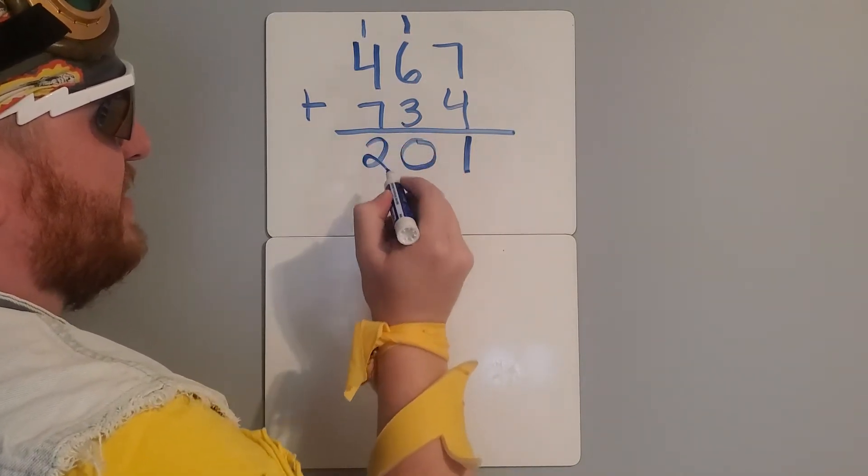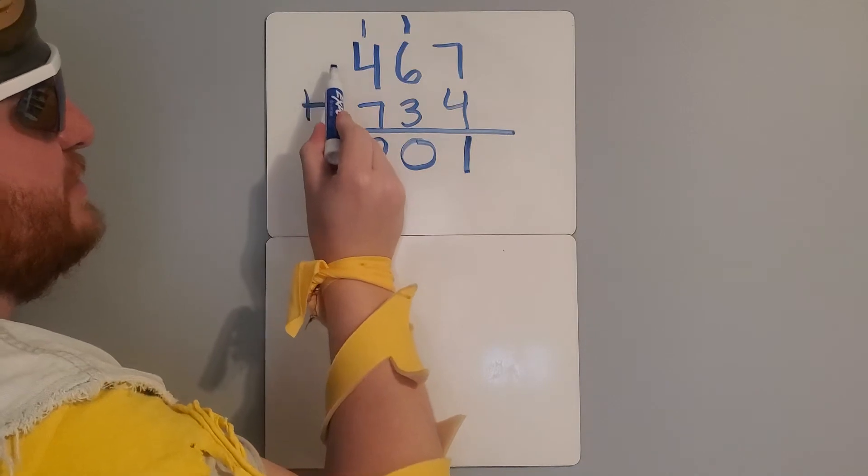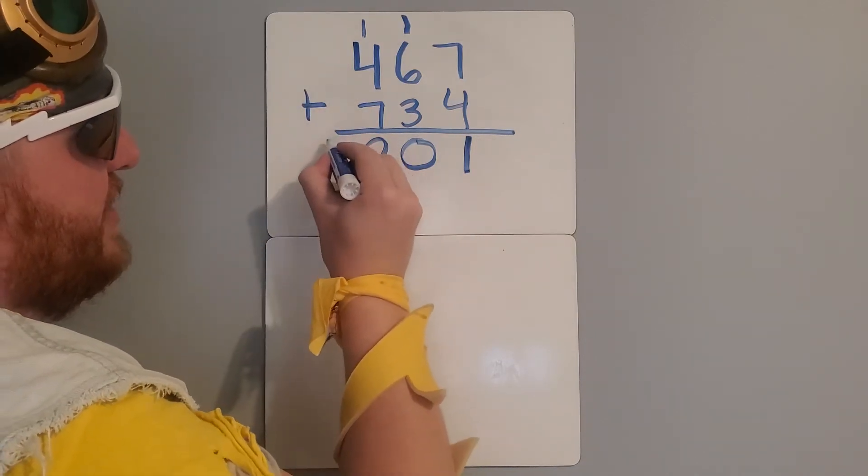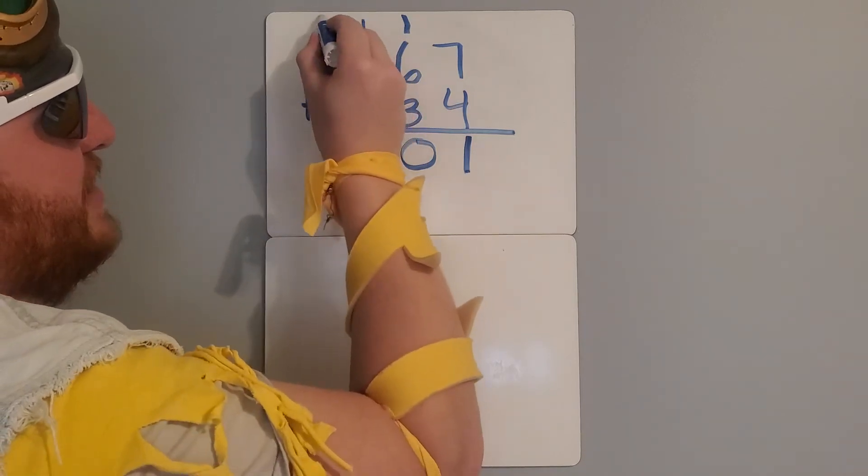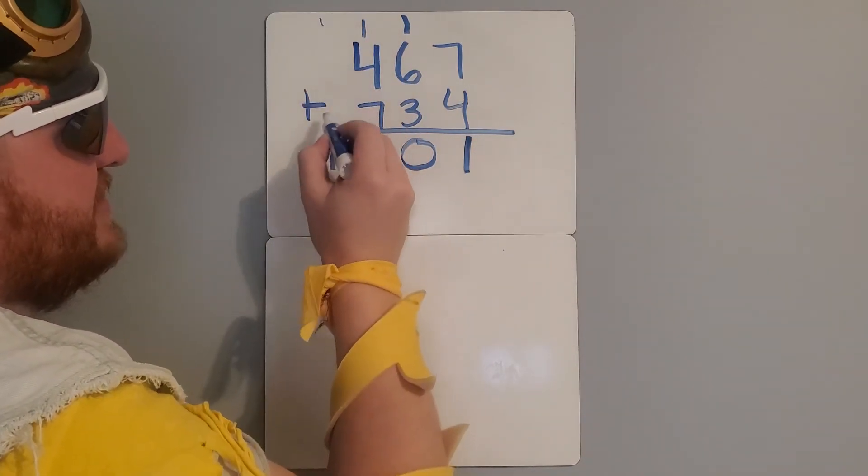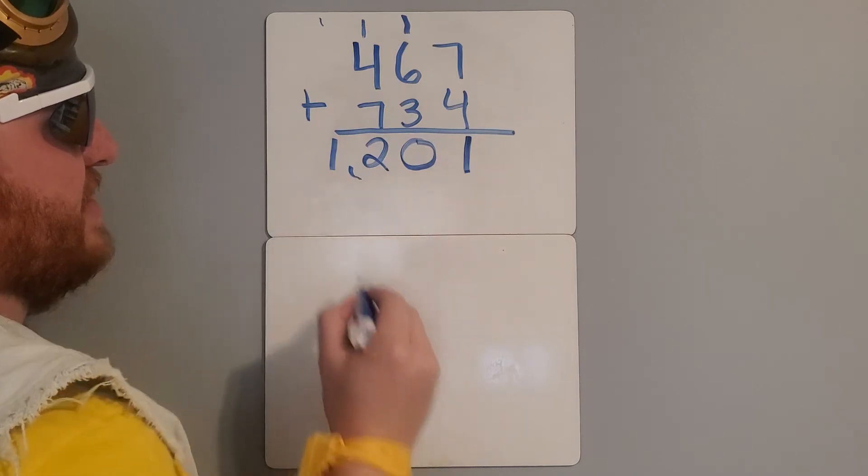Now, I'm at the end. I don't have anything in my thousands place, so I can go ahead and put my 1 right here. Technically, it would be like I'm putting 1 plus 0 plus 0 and still getting 1, but I can go ahead and put it right here.